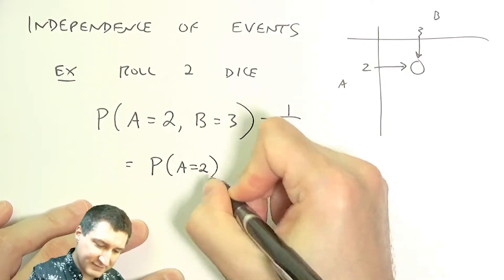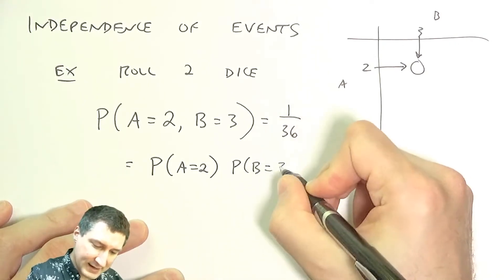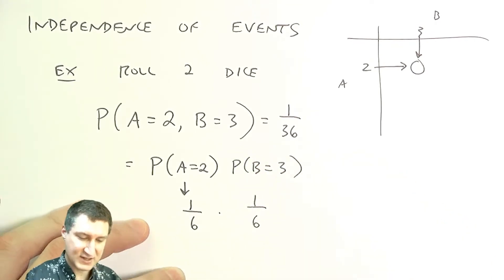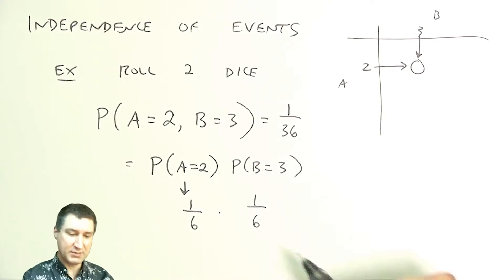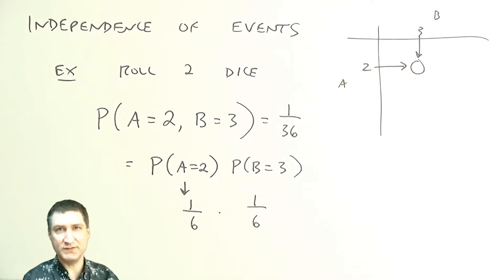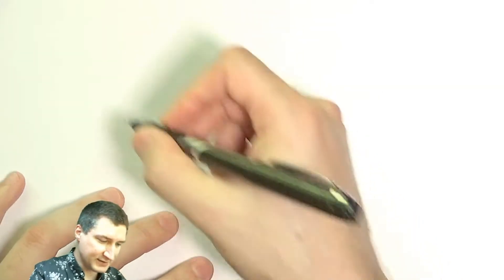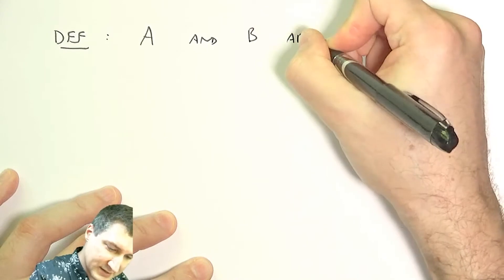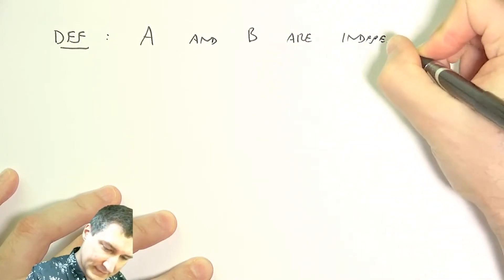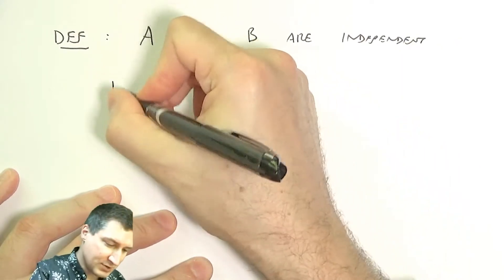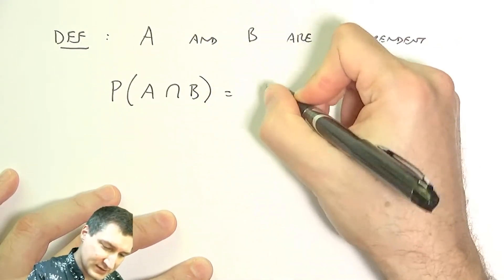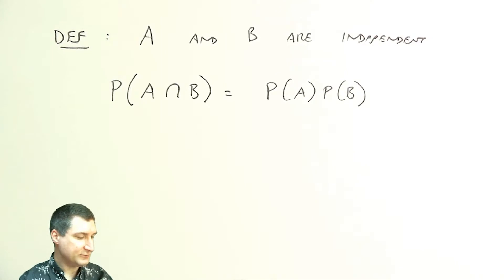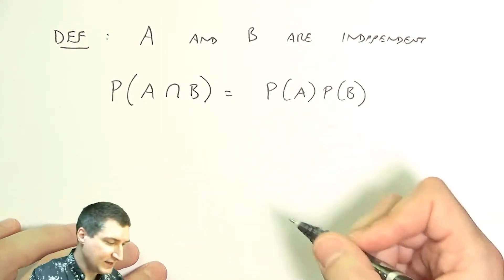So the probability of that happening is 1/36. Or I could observe that this is equal to the probability that die A equals 2 times the probability that die B equals 3. The probability of each happening by itself is 1/6, so we call these two events independent because the probability of both happening is the product of the two individual probabilities. Mathematically, the definition is that two events A and B are independent if and only if the probability of their intersection equals the product of their two probabilities.